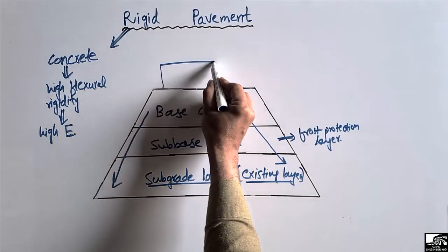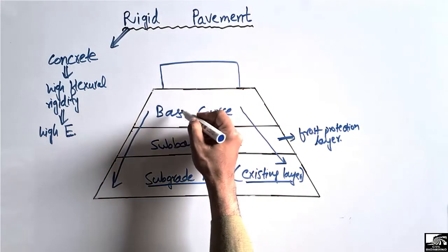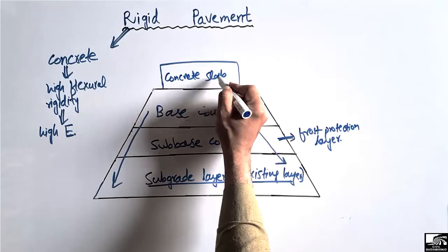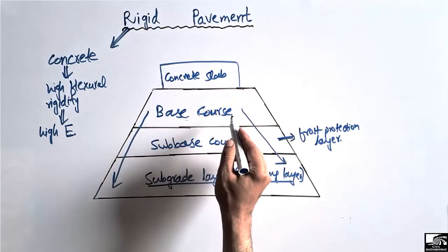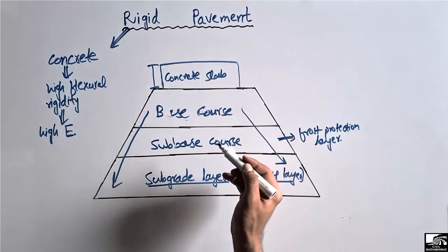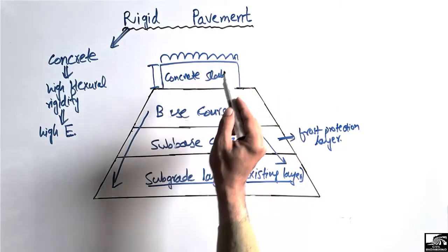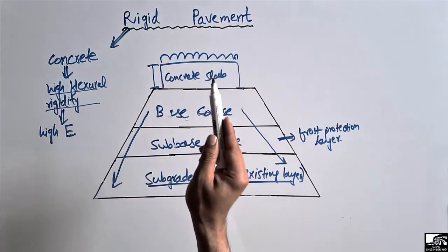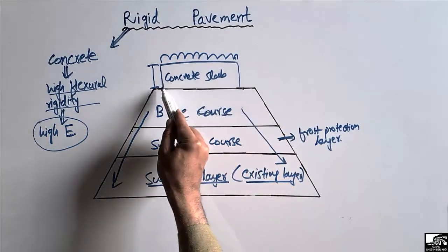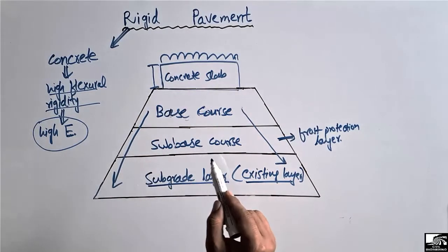On top of the base course, a concrete slab is provided, and it is due to this concrete slab that this pavement is known as the rigid pavement. The thickness of the concrete slab depends on the traffic load. The concrete slab has high flexural rigidity and can take a high amount of load, and due to its high elasticity it shows very little deflection. The concrete slab then transfers the load to the base course, then to the sub-base course, and then to the subgrade layer.